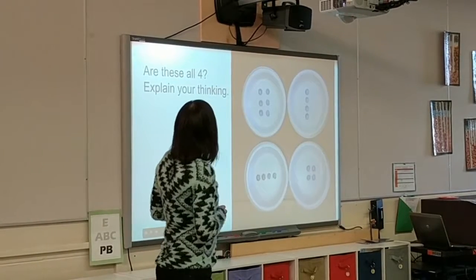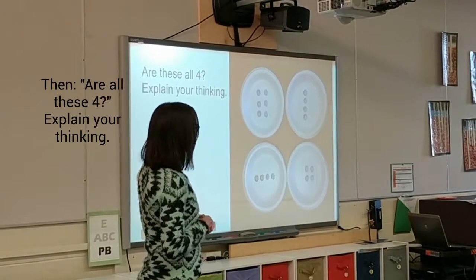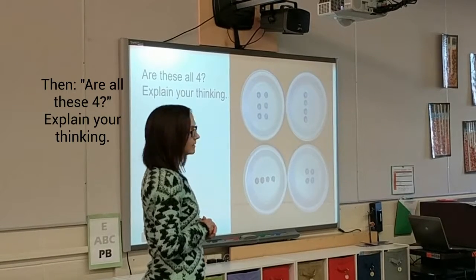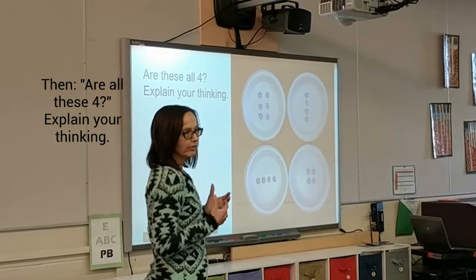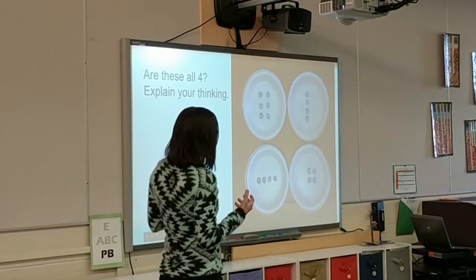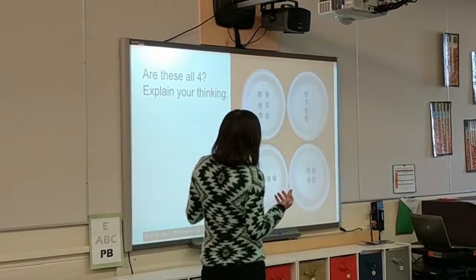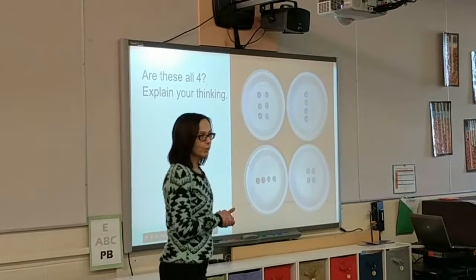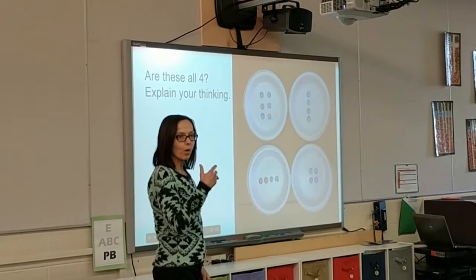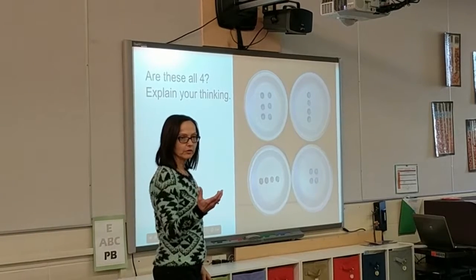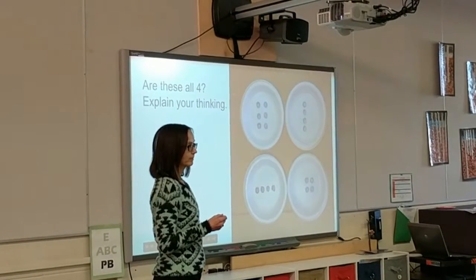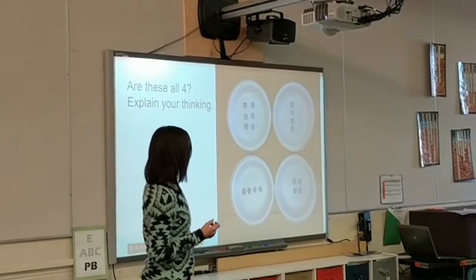So then: are all of these four? Explain their thinking. Are all of them four? Which one is — okay — which one's not, and why are the other ones? It's not about which one's not, but why are the other ones four? And again, how are they counting them?